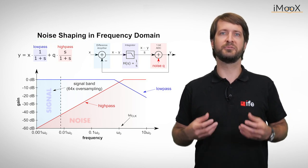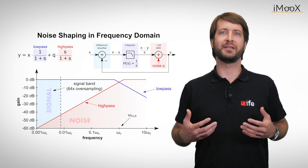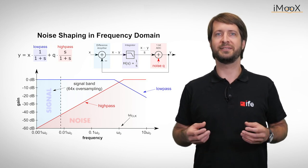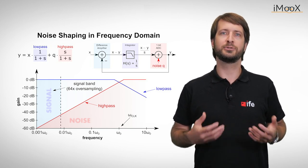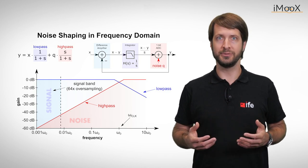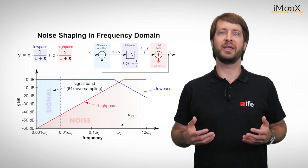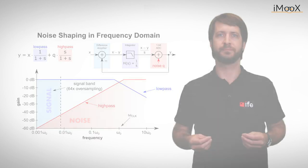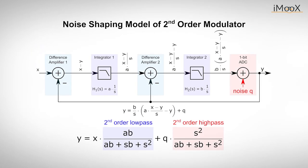This can be further advanced. To improve the dynamic range of a Delta Sigma ADC, we can not only increase its oversampling ratio, but also build higher-order modulators. This example shows a second-order modulator. With each additional stage, an integrator is added that further suppresses the quantization noise because each stage increases the order of the high-pass filter.